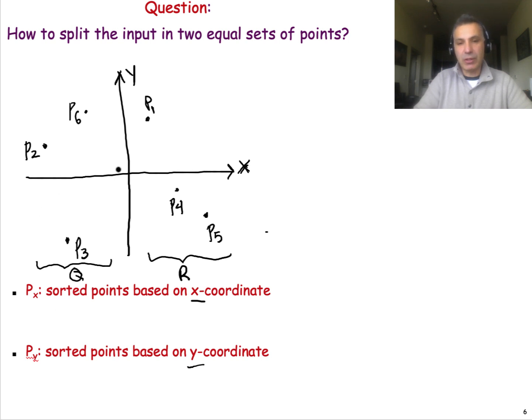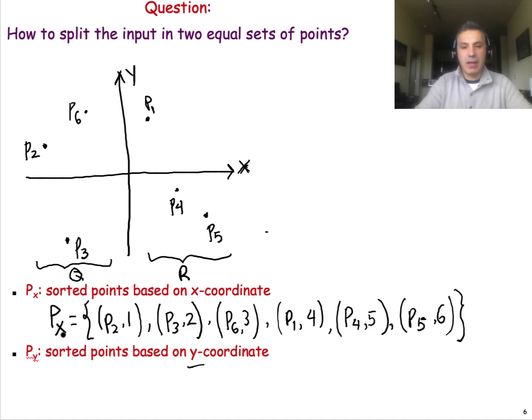Now, to sort the points based on the x-coordinate, we can do it in O(n log n). So Px here is the ordered list of points based on the x-coordinate. As you see, p2 comes first, then p3, then p6, and so on. And I have noted here not only the name of the point, but also the location of that point, the order of that point in the list. It will come handy a bit later, and it doesn't really cost us anything to compute.